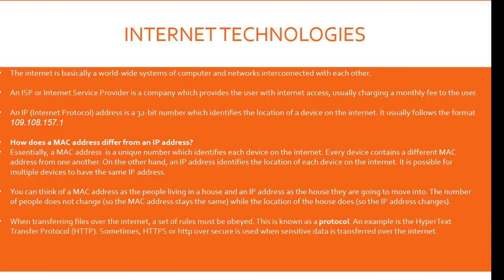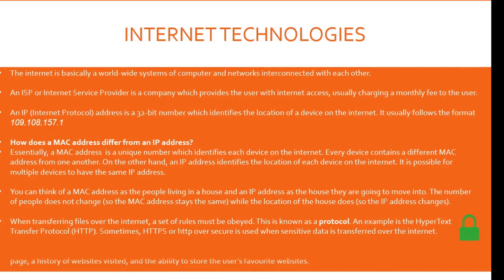When transferring data files over the internet, a set of rules must be obeyed — this is known as a protocol. An example is the Hypertext Transfer Protocol, or HTTP. Sometimes HTTPS, or HTTP over Secure, is used when sensitive data is transferred over the internet. The green padlock shown on screen indicates a website is using HTTPS. A web browser is software which allows a webpage to be displayed on the user's computer screen. Most web browsers have a homepage, a history of websites visited, and the ability to store the user's favorite websites.